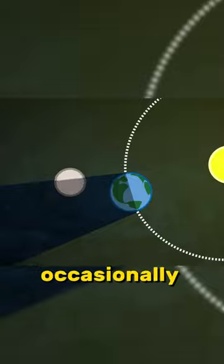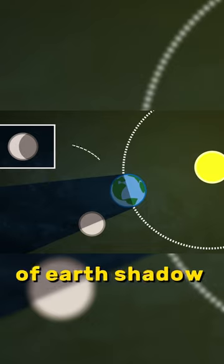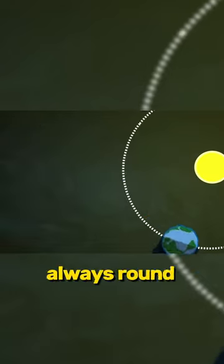So the moon occasionally passes through that shadow. And if you see the shape of Earth's shadow on the moon, it is always round. Always round.